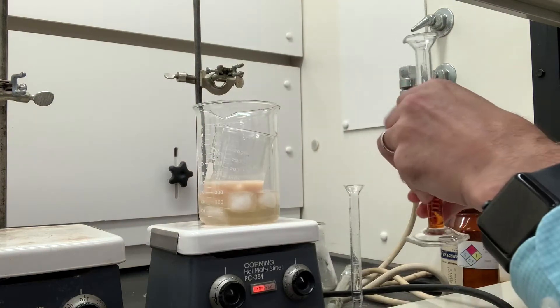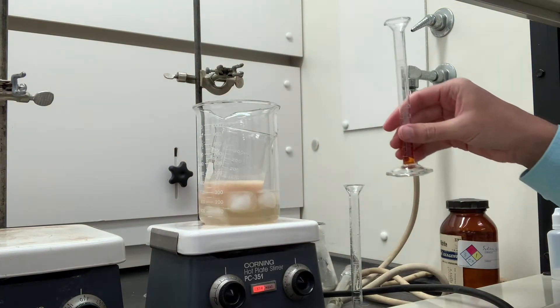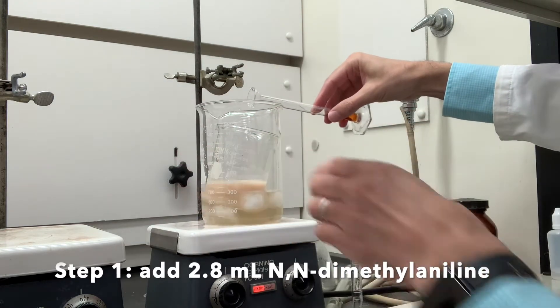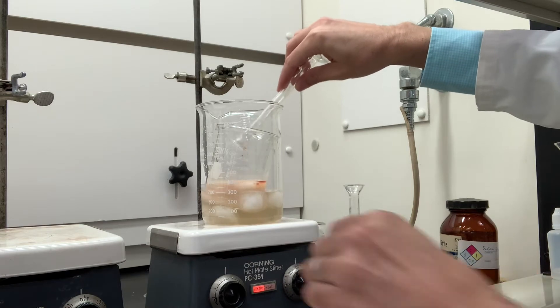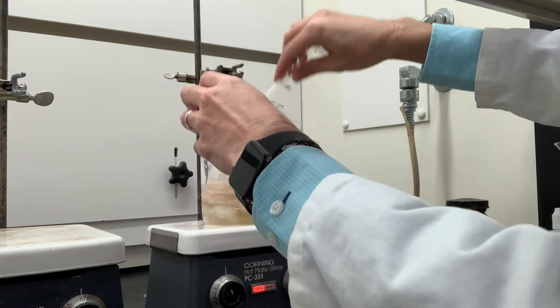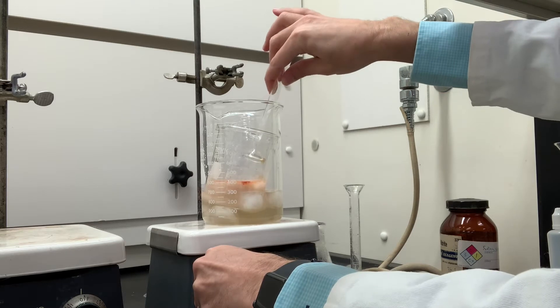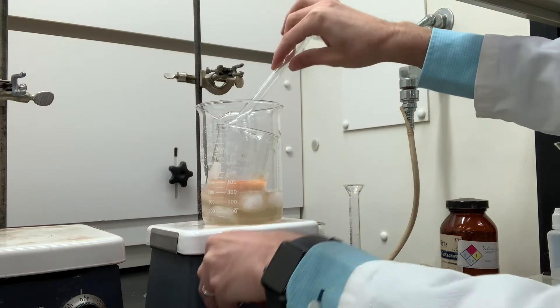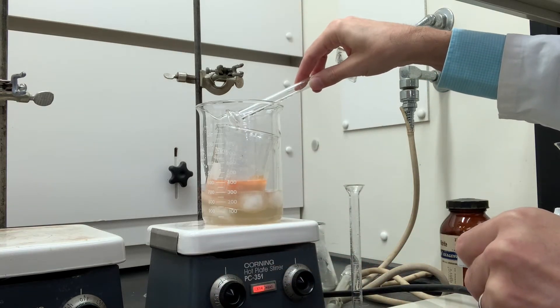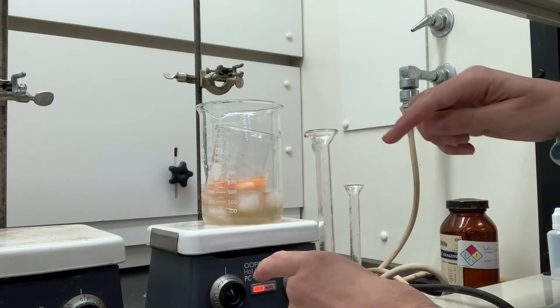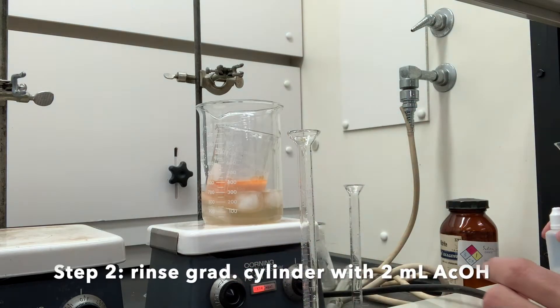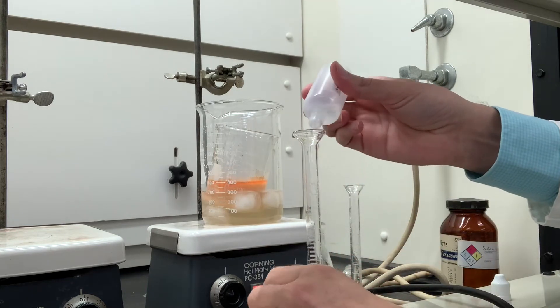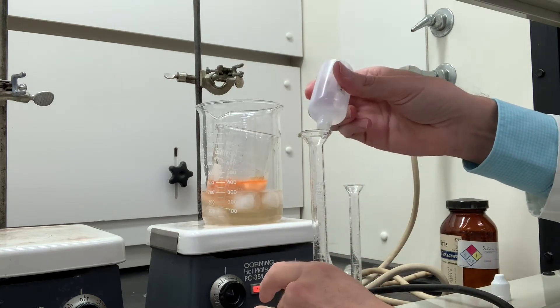So the procedure tells us to pour this into the 400 milliliter beaker now. And then we'll rinse the dimethyl aniline with two milliliters of acetic acid just to make sure we get it all in there.